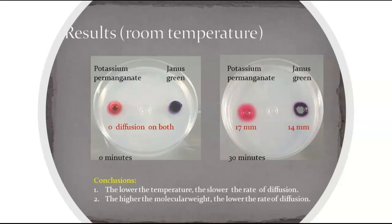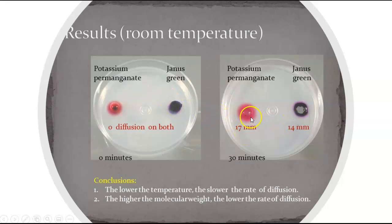What you would do in this experiment is take an agar plate and pierce two holes in the gel, then pour a few drops of each dye into the holes — potassium permanganate in one and Janus Green in the other. If you let this agar plate sit for a while, you'll notice that the dye will start to diffuse through the gel. Potassium permanganate has diffused further than Janus Green because it has a lower molecular mass, and therefore it diffuses faster.